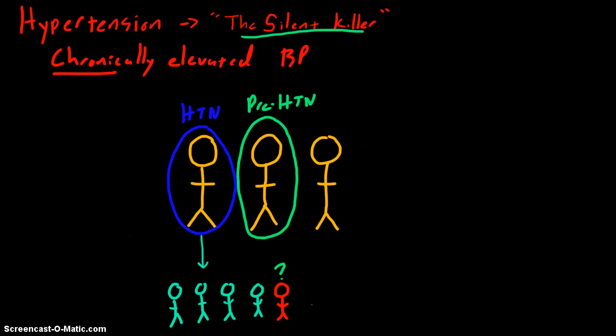Hypertension is an insidious process that for years can go unnoticed until something bad happens, such as stroke or kidney failure. In 2009, hypertension was the direct cause or contributing cause of 348,000 deaths, which is about 1,000 deaths a day.